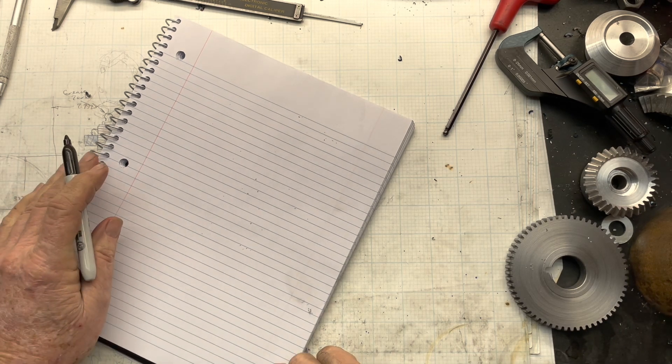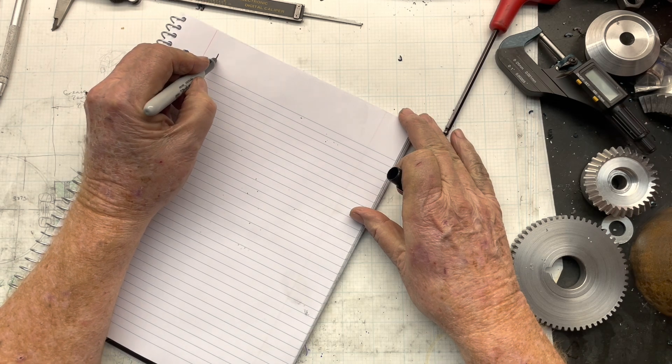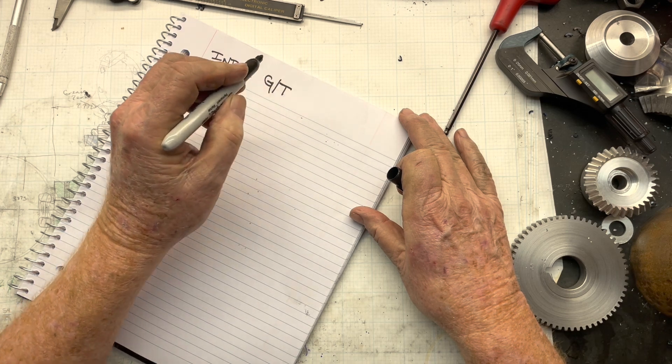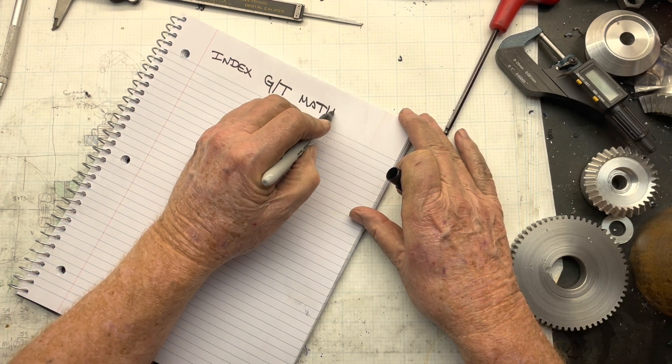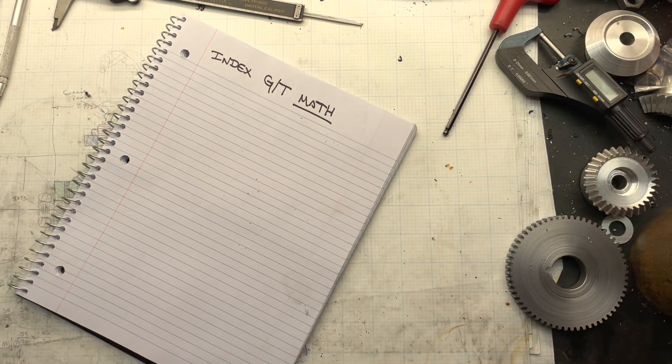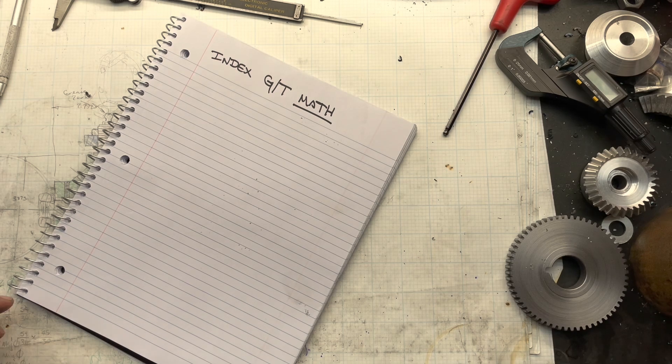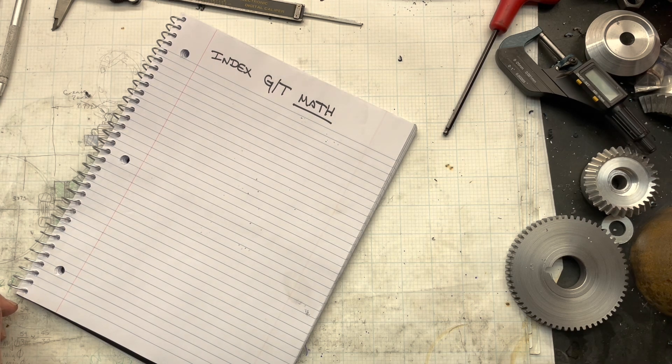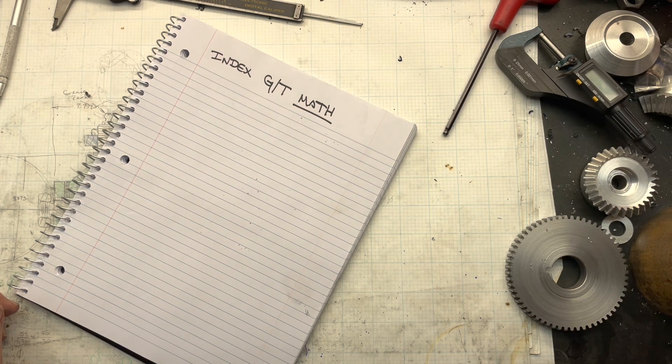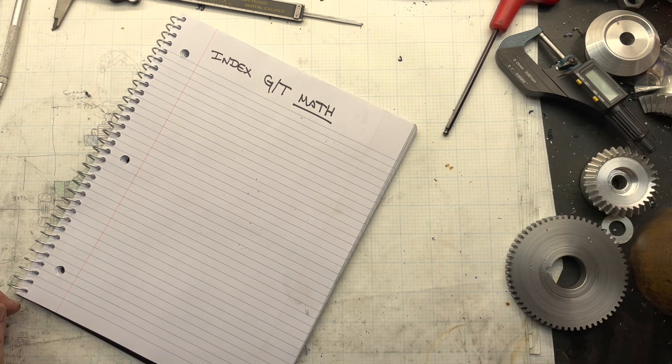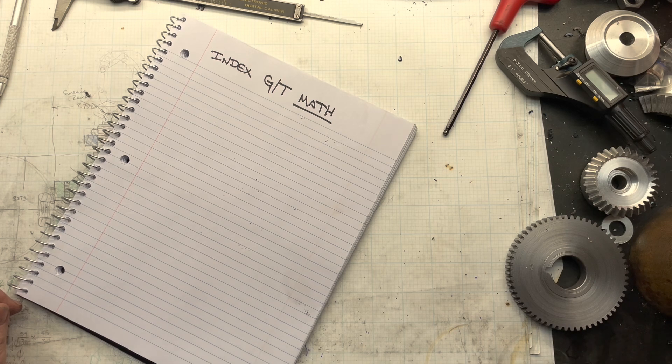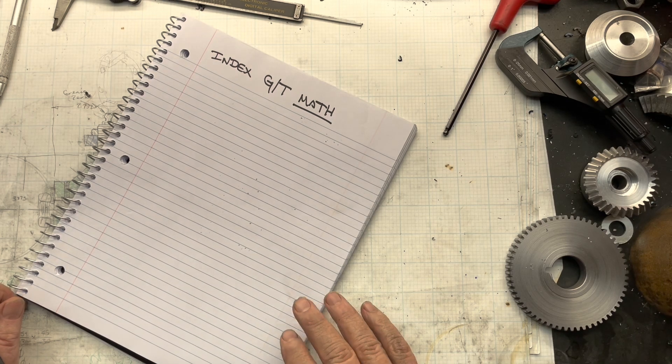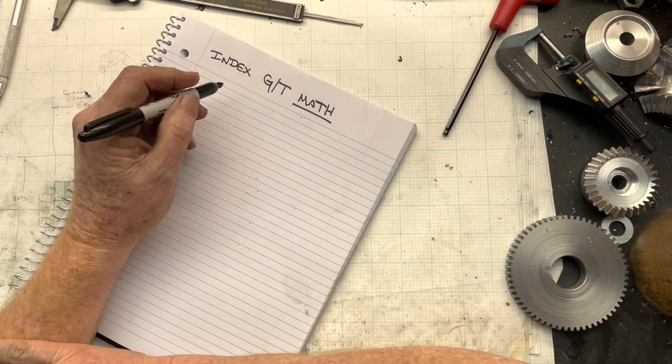Well, I want to spend just a few minutes talking about index gear train math. Now, I hope nobody freaks out at the idea of doing a little math, but I wanted to spend some time with this because I really struggled trying to understand it based on what I could find online. And it shouldn't have been a surprise to me, but it's actually pretty simple. It's all integer math and integer fractions, and even though it took me a long time to figure that out, it's actually really simple.